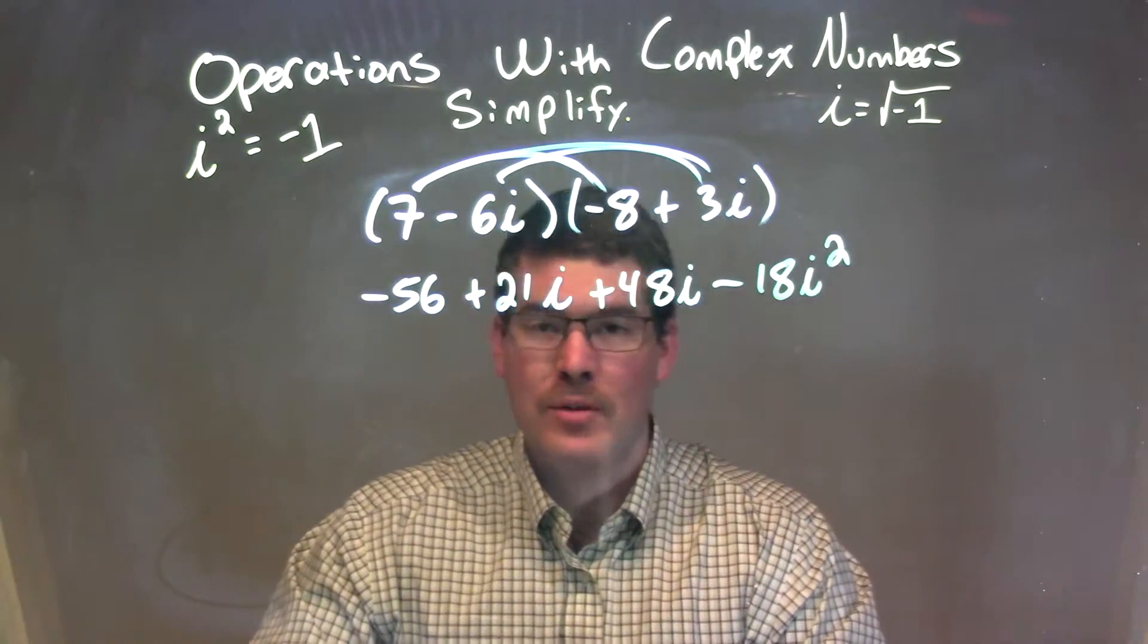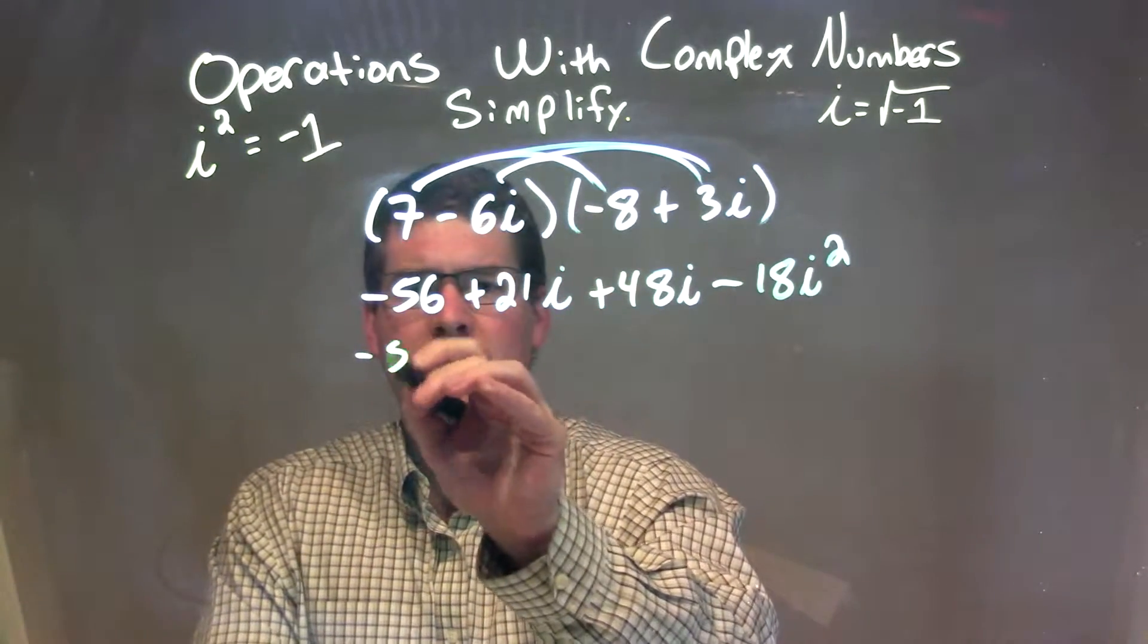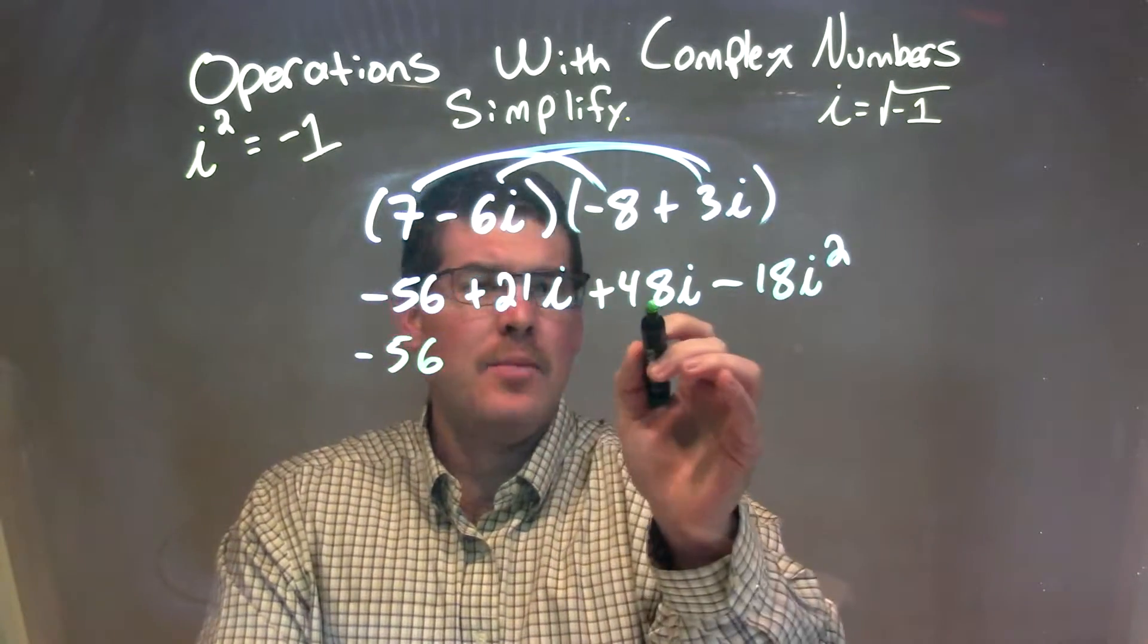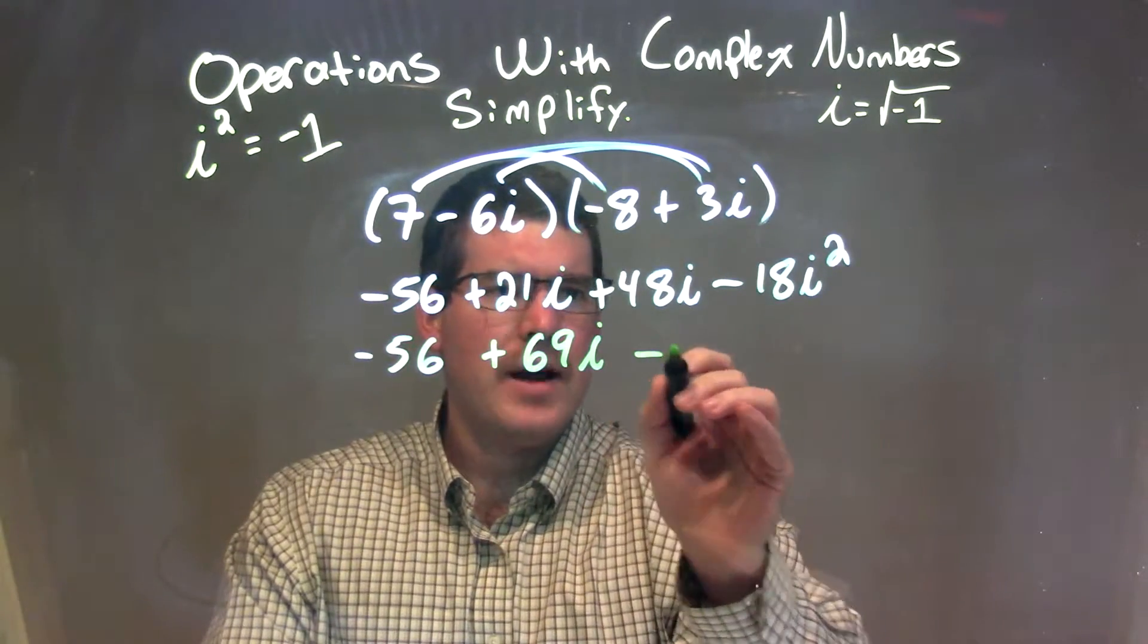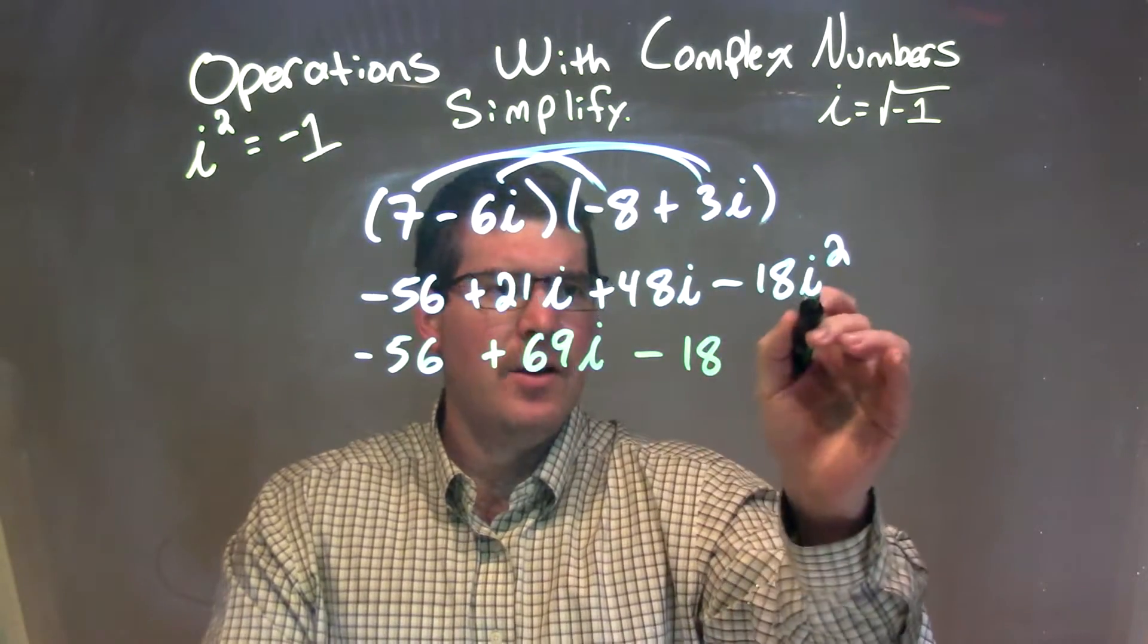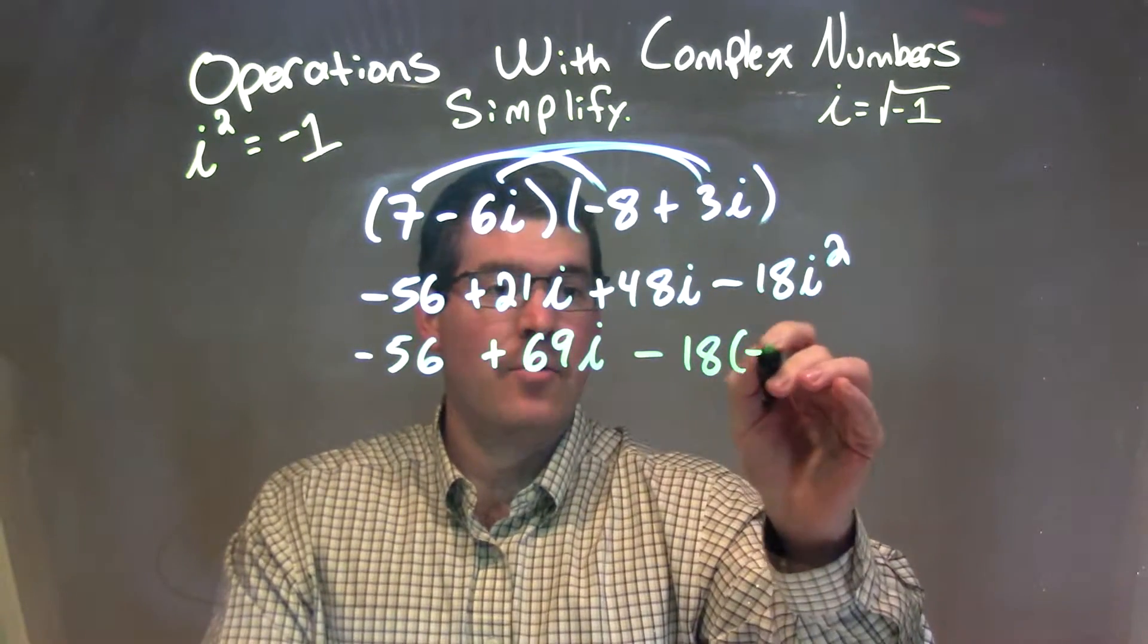Now let's simplify. Negative 56 comes down, but 21i plus 48i comes out to be 69i. And then we subtract 18 times... well, i squared we know is negative 1.